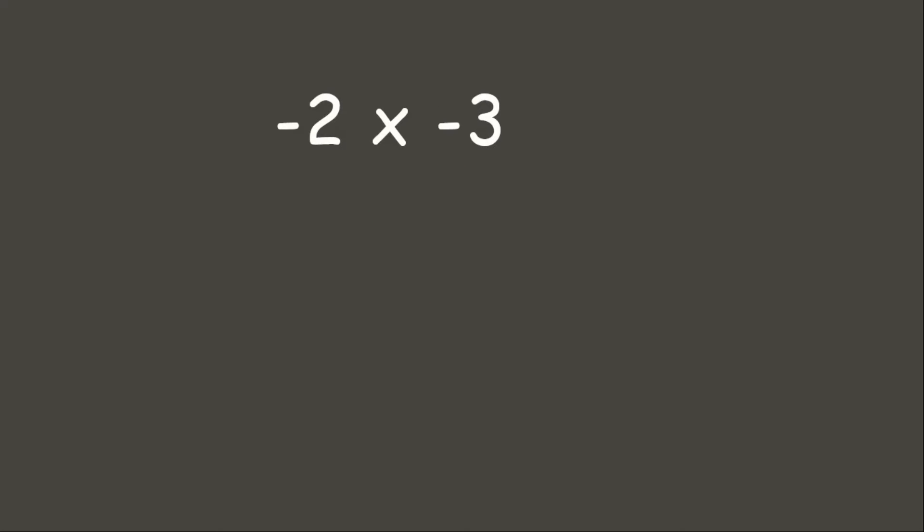Now let's try to multiply negative 2 times negative 3. As you can see, we are trying to multiply both negative integers. Let's try to solve this using our counters. We have our multiplicand negative 2, so let's put 2 negatives. And we need to multiply it to negative 3, so we need to make 3 groups of 2 negatives.